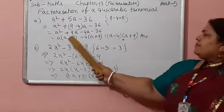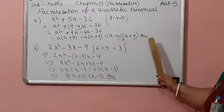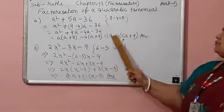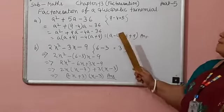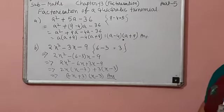Now a plus 9 and a plus 9 is common. So we write a plus 9 and remaining part a minus 4. That means a minus 4 bracket close. A plus 9 is the final answer.